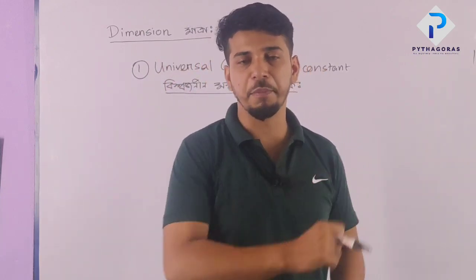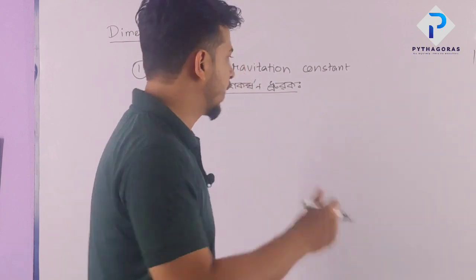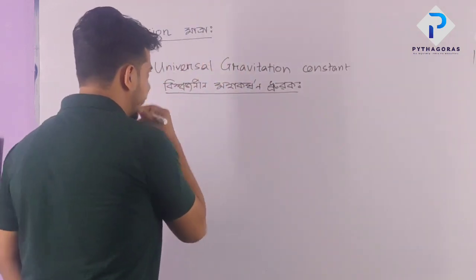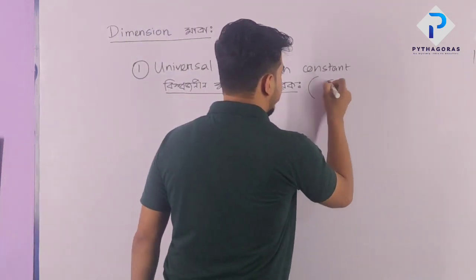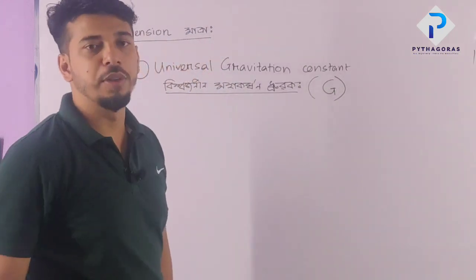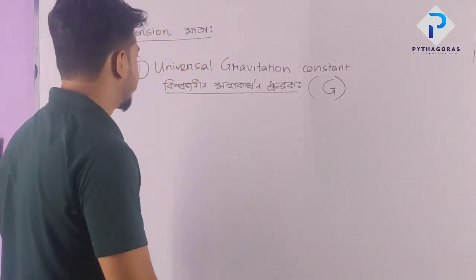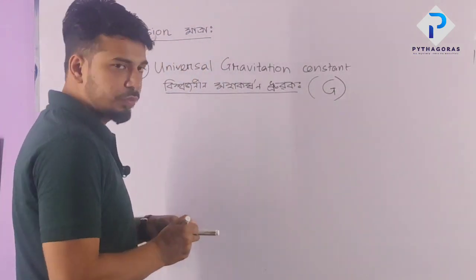It's fixed in the whole universe. So the Universal Gravitational Constant G is fixed throughout the entire universe.